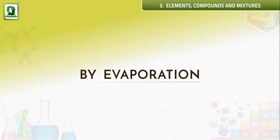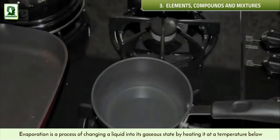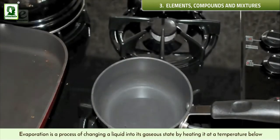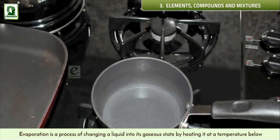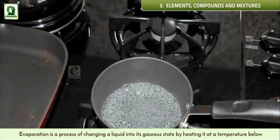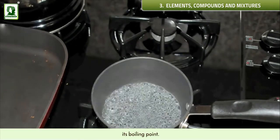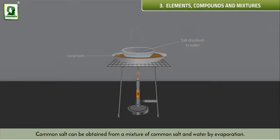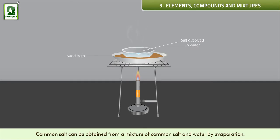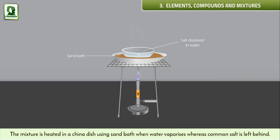By evaporation: evaporation is a process of changing a liquid into a gaseous state by heating it at a temperature below its boiling point. Common salt can be obtained from a mixture of common salt and water by evaporation. The mixture is heated in a china dish using a sand bath, when water vaporizes whereas common salt is left behind.